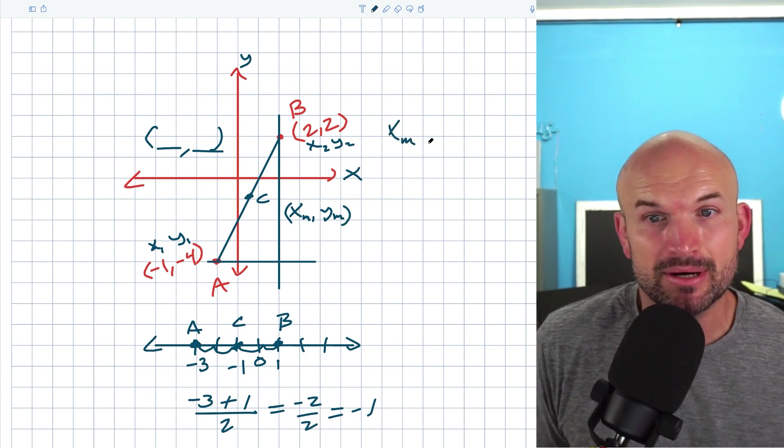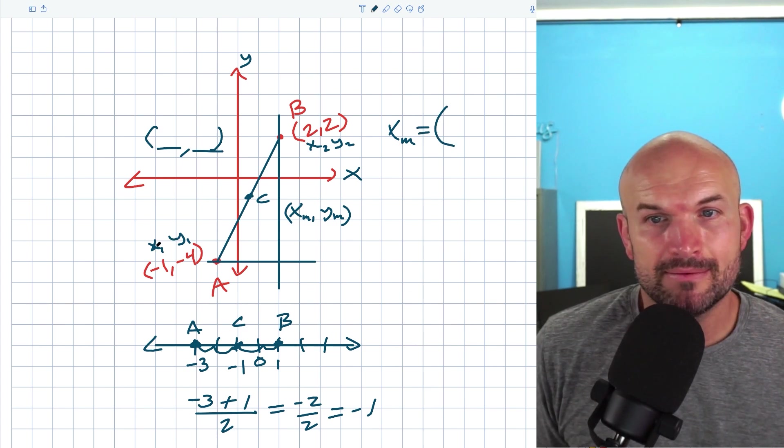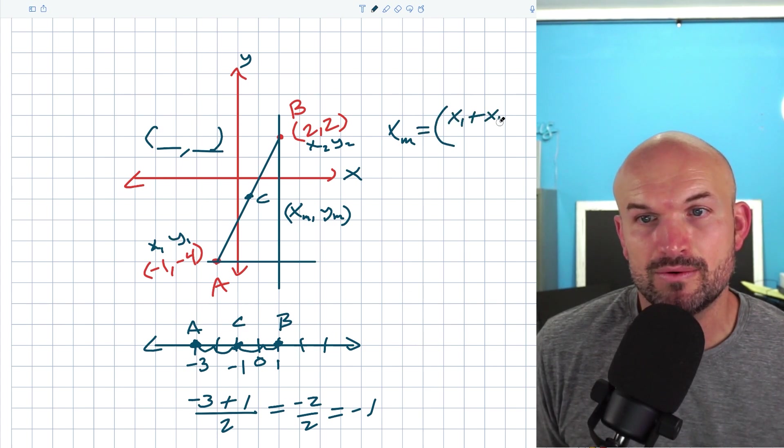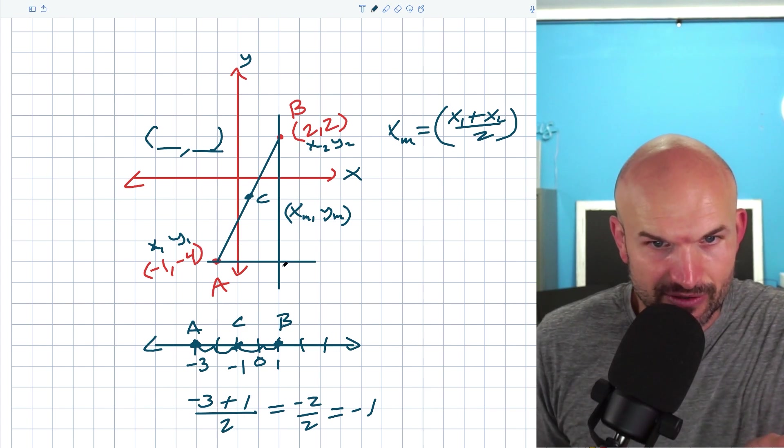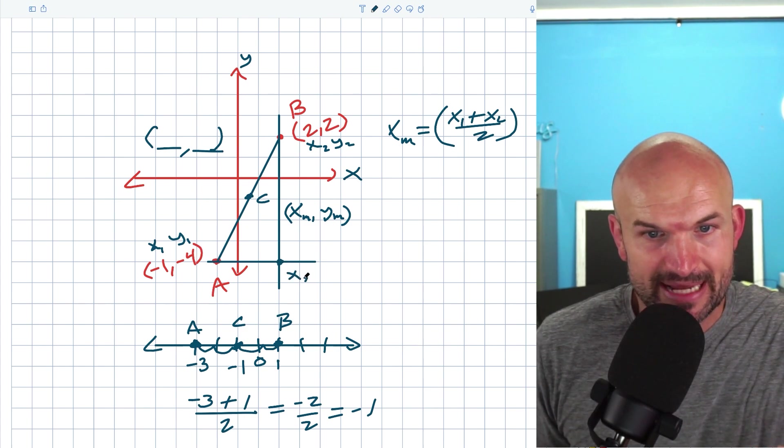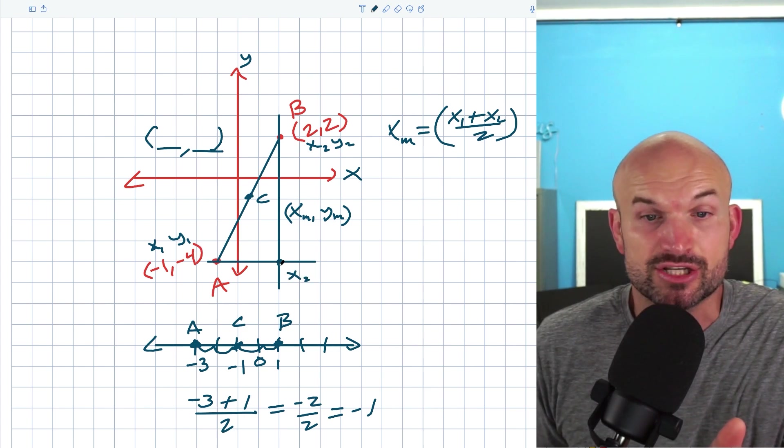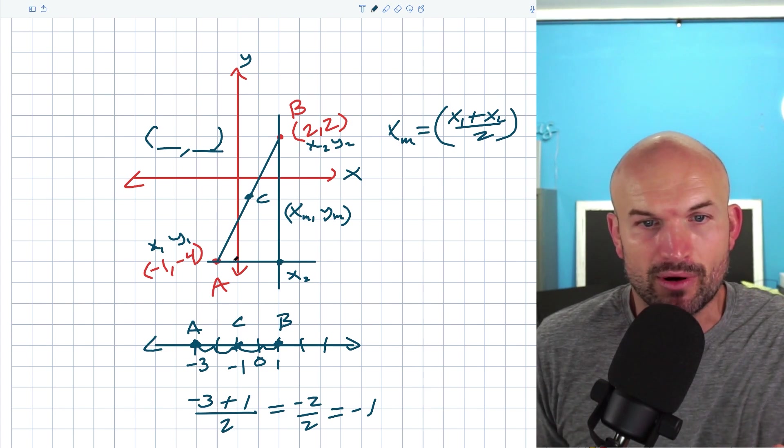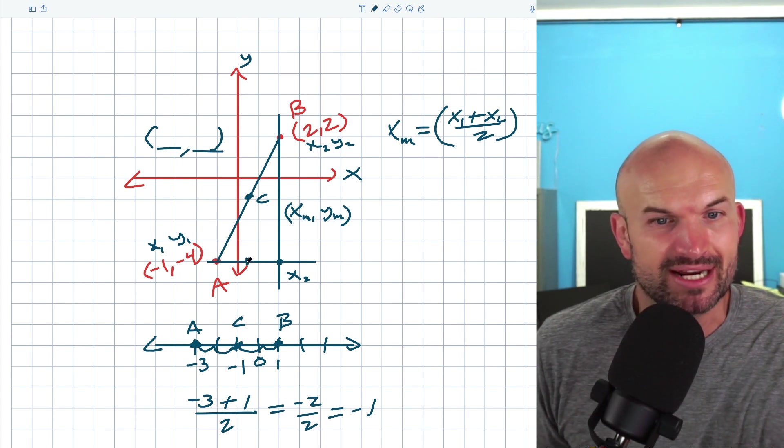So therefore to find X_M, all I'm simply going to do is add my X1 plus my X2 and then divide by two. Because basically you can see here that this point is going to be X2. If you see how far that is over, so I'm just going to add these two points and then find the middle, which is going to be somewhere in there.